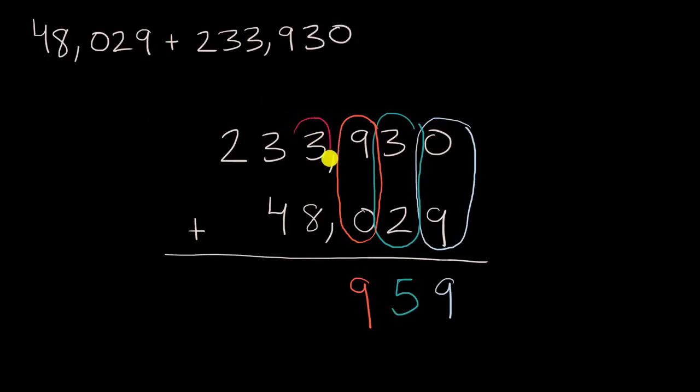Now something interesting is going to happen in the thousands place. Three thousands plus eight thousands—that would be 11 thousands. But we can rewrite 11 thousands as 1 thousand and 1 ten thousand. Sometimes you might see this described as carrying the one. Three plus eight is 11, where you carry the one. But all you're really doing is regrouping.